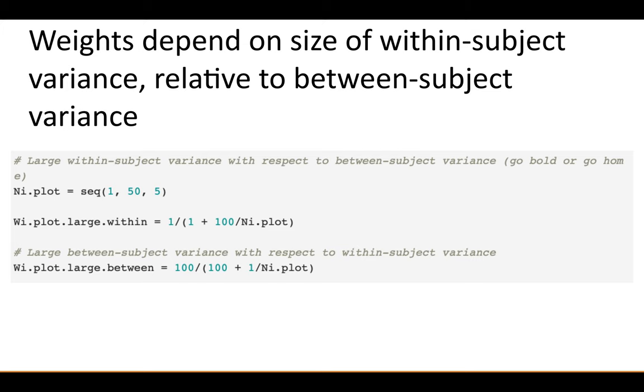And again, I talked about this earlier when I showed the equation, the weights depend on the size of the within-subject variance relative to the between-subject variance. So here what I'm doing is I have two examples. I plot the sample size going from one observation within-subject to 50, and then I have the weight when there's a large within-subject variance. So here the between-subject variance is 1, the within-subject variance is 100, and then I flipped it and I have a large between-subject variance here. In a lot of cases, your between-subject variance will be a lot higher than your within-subject variance, but I hate rules of thumb because there are plenty of data sets where the reverse is true. So don't always assume your between-subject variance will be higher because that's not necessarily the case.